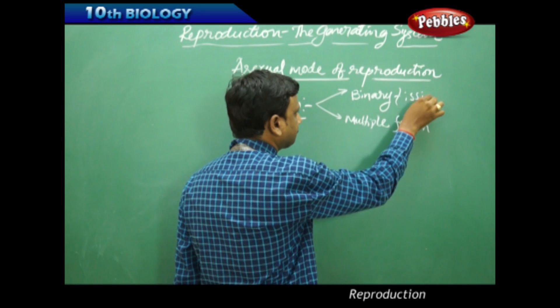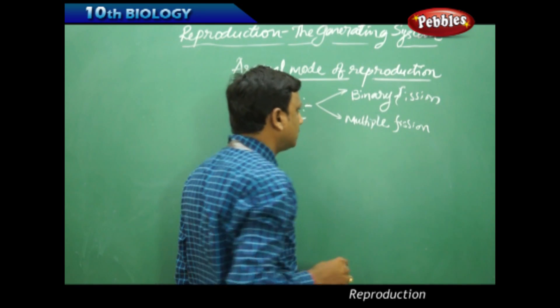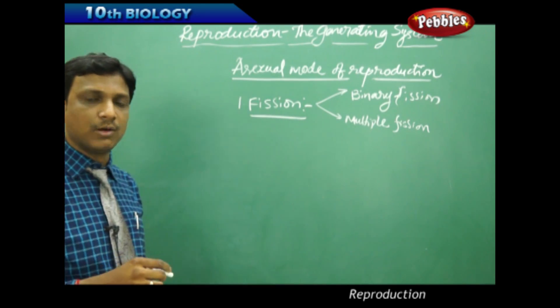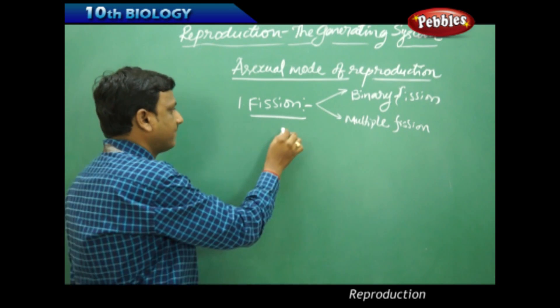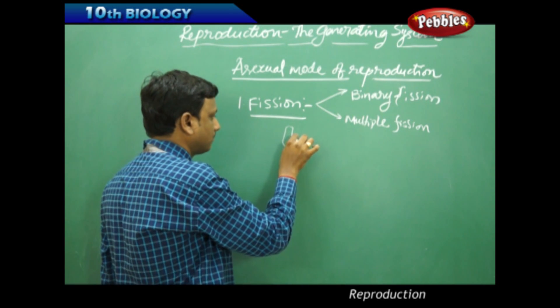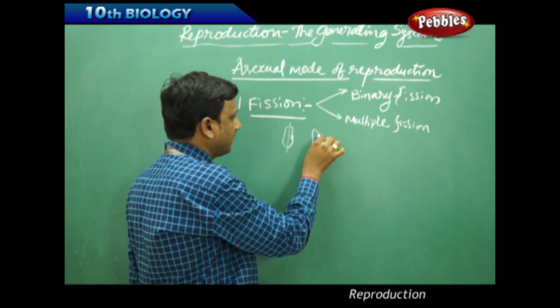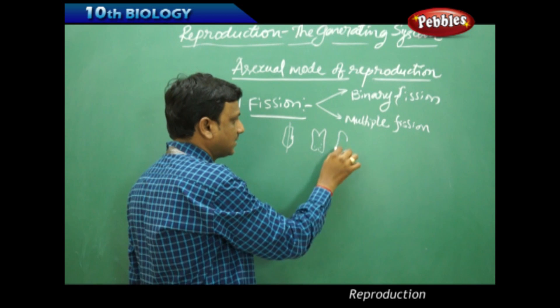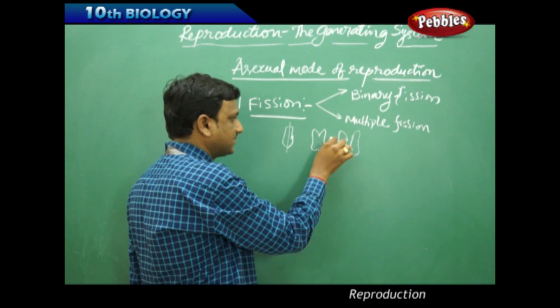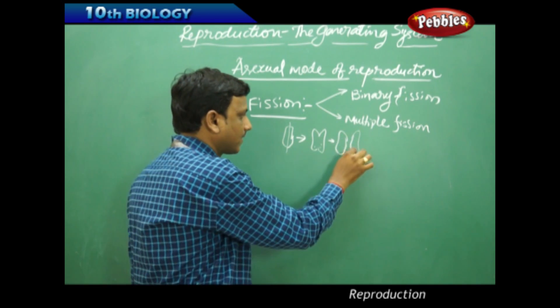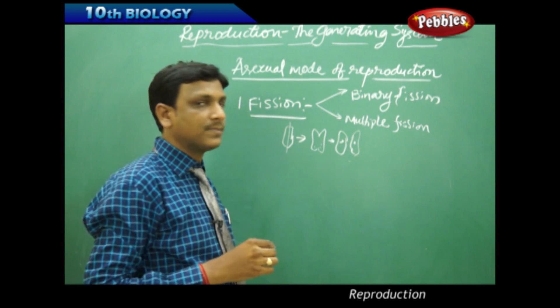In binary fission, a single organism splits into two. For example, a Paramecium splits into two organisms, and now two individual organisms form. This is binary fission.